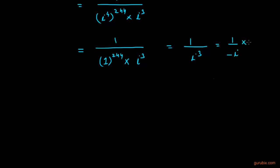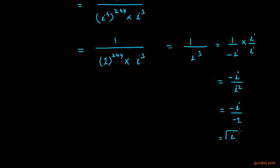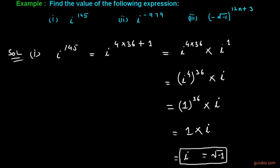Now we can multiply the numerator and denominator by iota. Then its value becomes negative iota over iota squared, and iota squared means negative 1. So this value becomes iota. This is the solution of the second part and now we shall move to the third part.